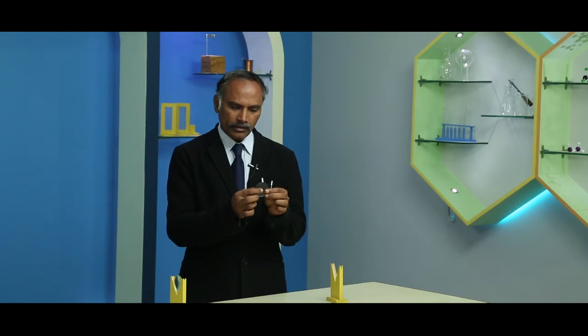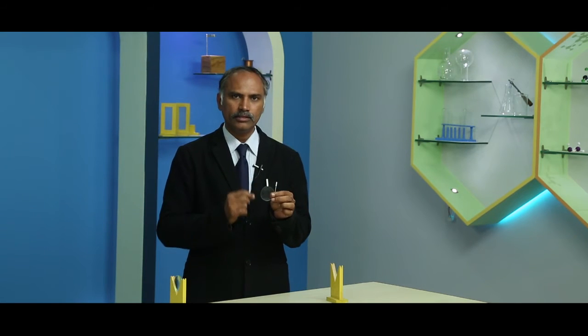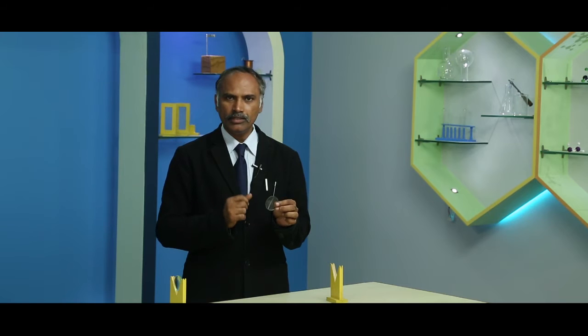A concave lens is thin at the middle and thick at the edges. It is also known as a diverging lens, because it diverges the light rays incident on it.